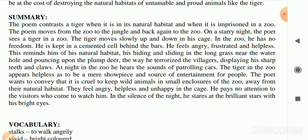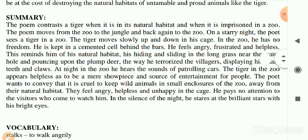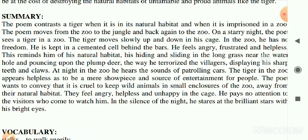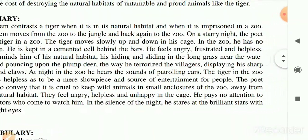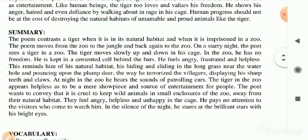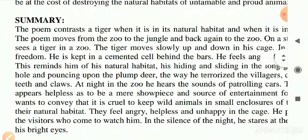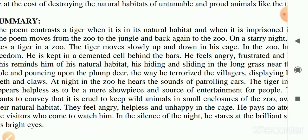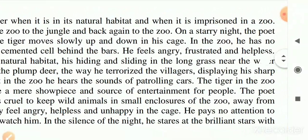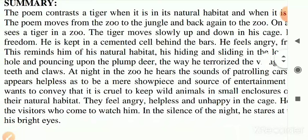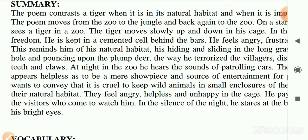The poem moves from the zoo to the jungle and back again to the zoo. First the poet presents the tiger angrily walking in his caged portion, away from his original land. Then he describes who should be in the jungle and who is freely living in the jungle. At last he talks about the tiger once again in the zoo - on a starry night, the tiger moves slowly up and down in his cage with no freedom.